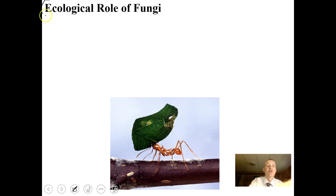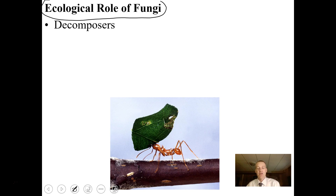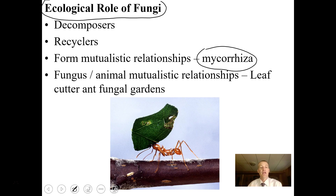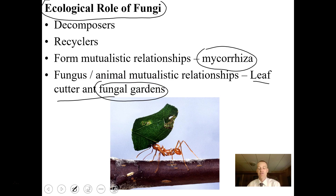Ecologically, fungi are super important. They are decomposers — anything that falls dead, plants or animals, is susceptible to decomposition by fungi. They are recyclers, breaking things down and recycling nutrients that plants can use. They form the mutualistic mycorrhizae relationships that help plants absorb minerals and nutrients more effectively. They also form mutualistic relationships with animals — leafcutter ants grow fungal gardens, feeding the fungus, and eating off of it in return, with both organisms benefiting.